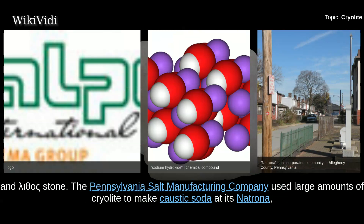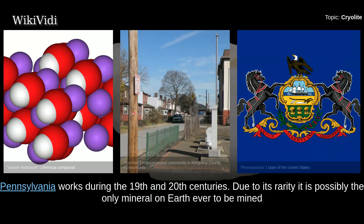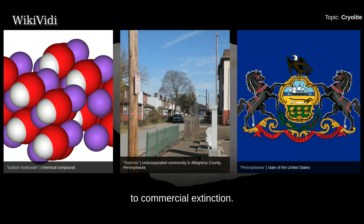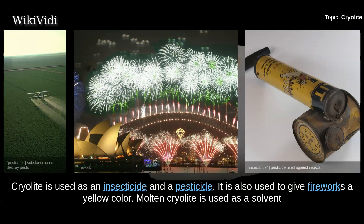The Pennsylvania Salt Manufacturing Company used large amounts of cryolite to make caustic soda at its Natrona, Pennsylvania works during the 19th and 20th centuries. Due to its rarity, it is possibly the only mineral on earth ever to be mined to commercial extinction.